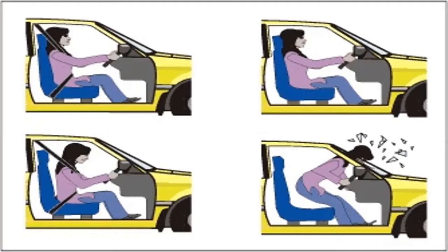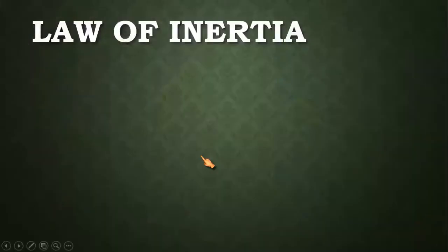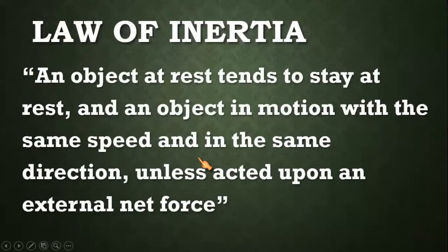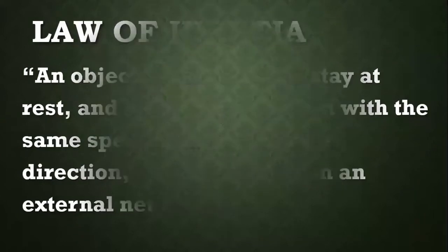Let us state what the law of inertia is. The law of inertia says that an object at rest will remain at rest, and an object in motion will continue to move in the same speed and in the same direction. It will only change unless it is acted upon by an unbalanced force or external net force.